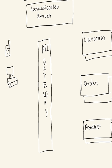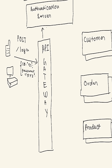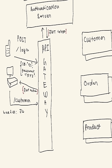For authenticating microservices using JWT, first we call the login API with an ID and password. This request goes to the authentication server, where a proper JWT token is generated. In further requests, we pass this JWT token as part of the header — for example, when we want to call a customer service.